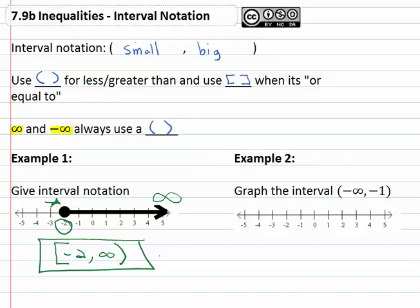Example two has us do the same thing backwards. We're asked to graph the interval from negative infinity to negative one. Now negative infinity is over here off to the left, all the way negative, as negative as you can go, and we go all the way up to negative one.